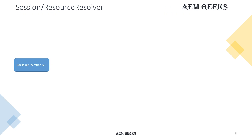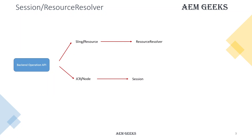In AEM, to perform any backend operation — whether it's a read or write operation — there are two main APIs available. One is the Sling or Resource API, and the other is the Java Content Repository (JCR) or Node API. If you use Sling APIs, you must have a resource resolver, and to perform any operation using the node-related API, you need a session.